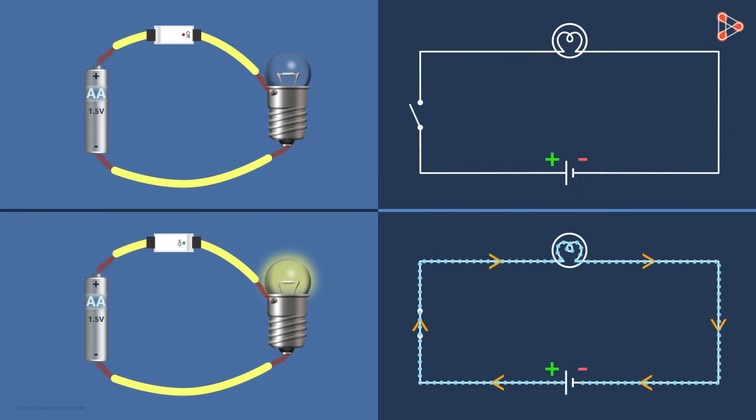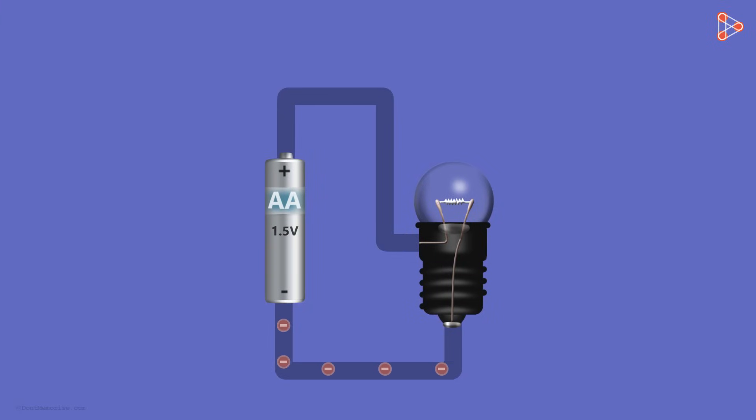Now here is a question for you. We know that when the electric current flows between the two ends of the filament, the filament heats up. This heating up of the filament results in its glowing and this is how we receive light from the bulb.